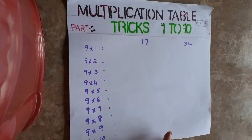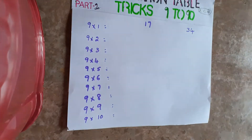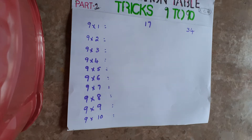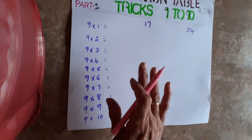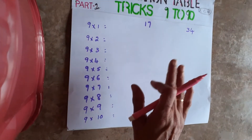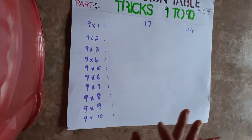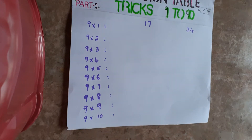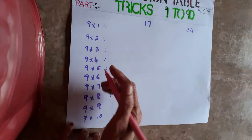Hello, welcome to Bharani. Today's topic is multiplication tables 9 to 90 — how you can do them easily within seconds. First, the 9 table. If you want to know the bigger tables, you should know up to 9 tables perfectly. Then any table, anywhere, you can do. It will be easy for division and multiplication.